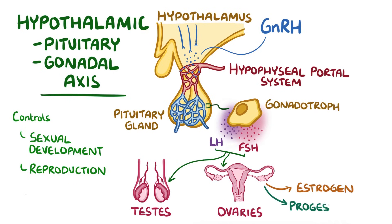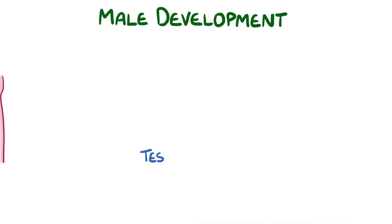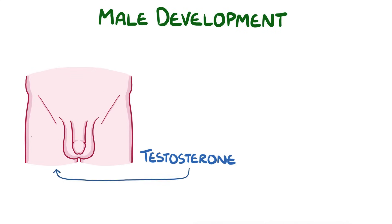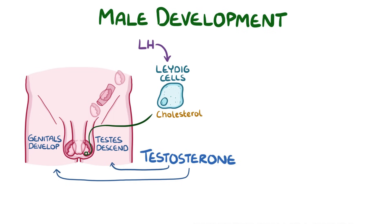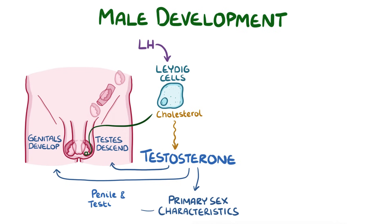These are oestrogen and progesterone in women, and testosterone in men. Early on in male development, testosterone helps the external sex organs to differentiate into male genitals and causes the testes to descend from the abdomen into the scrotal sac. During puberty, the Leydig cells of the testes respond to luteinising hormone by converting more cholesterol into testosterone. The high levels of testosterone lead to the development of primary sex characteristics, like penile and testicular growth.